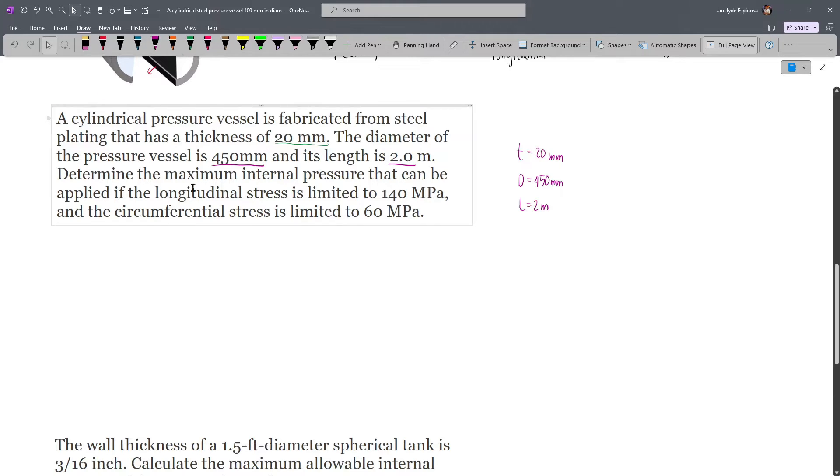We have to determine the maximum internal pressure if the longitudinal stress is limited to 140 MPa and the circumferential stress is limited to 60 MPa. So our allowable longitudinal stress is 140 MPa and our allowable circumferential stress is 60 MPa.